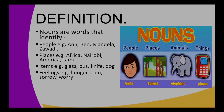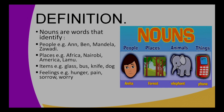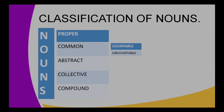Let's look at examples of nouns that identify people. We have Ann, Ben, Mandela, Zawadi, and viewer — your name is also a noun. Names of places such as Africa, Nairobi, America, Lamu, or any other place you know of. Items such as glass, bus, knife, dog, and others also fall under nouns. We also have nouns identifying feelings such as hunger, pain, sorrow, worry, and any other feeling.